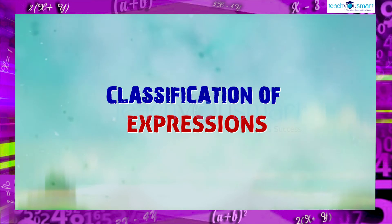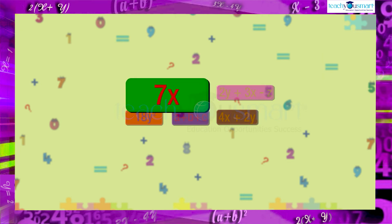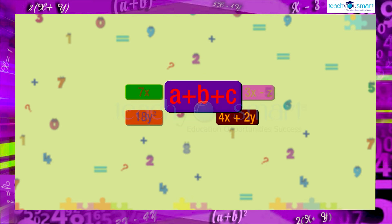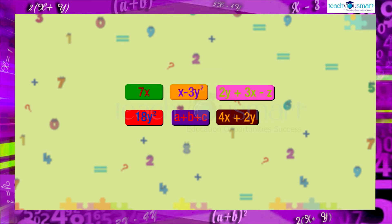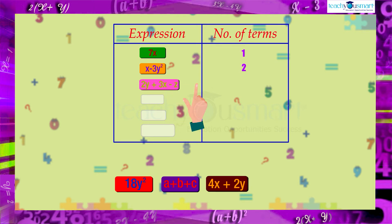On the basis of several terms, expressions have some classifications. Look at these expressions: 7x, x minus 3y square, 2y plus 3x minus z, 18y square, a plus b plus c, 4x plus 2y. In 7x, there is only one term. In x minus 3y square, there are two terms. In 2y plus 3x minus z, there are three terms.